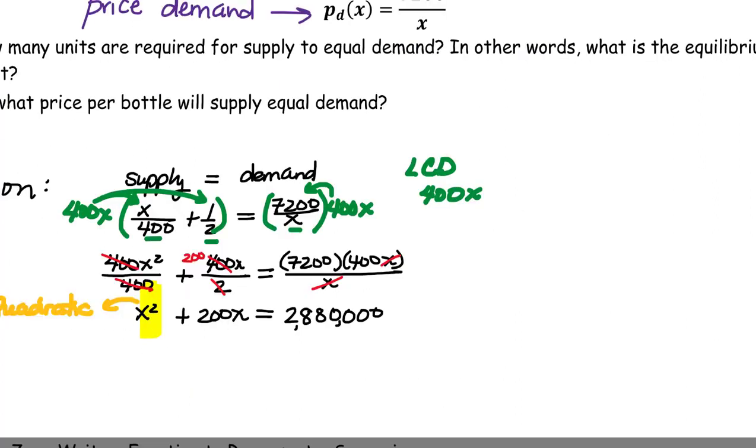So I'm going to move the 2,880,000 over to the left side of the equation to get zero on the right. And now I can see that A is 1, B is 200, and C is negative 2,880,000. So let's go ahead and plug that into the quadratic formula.